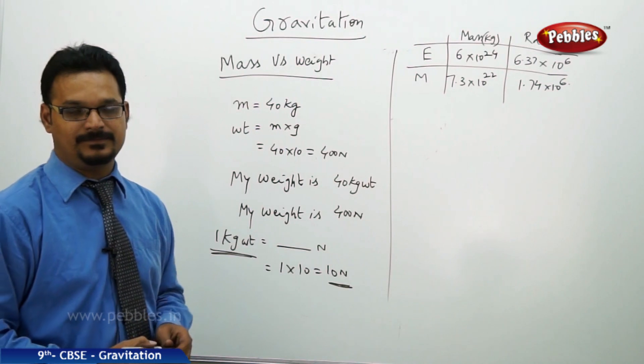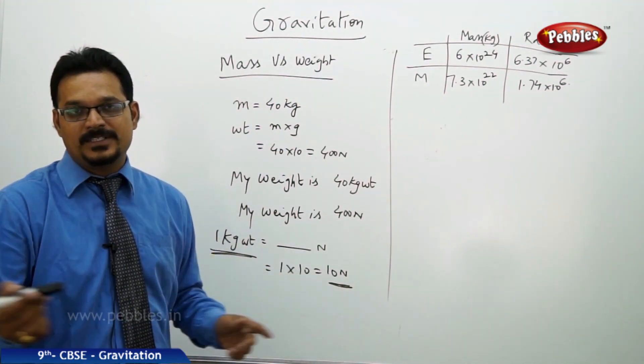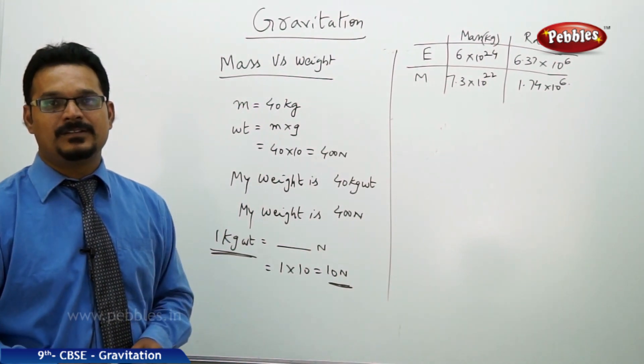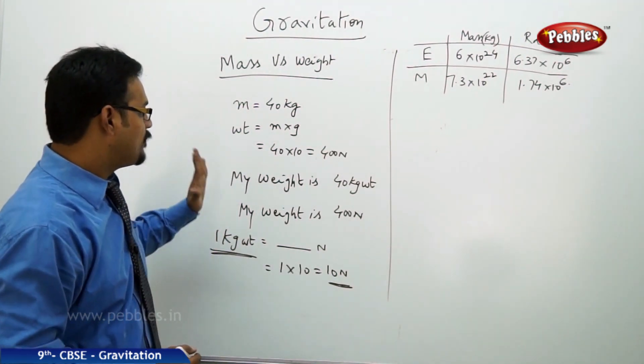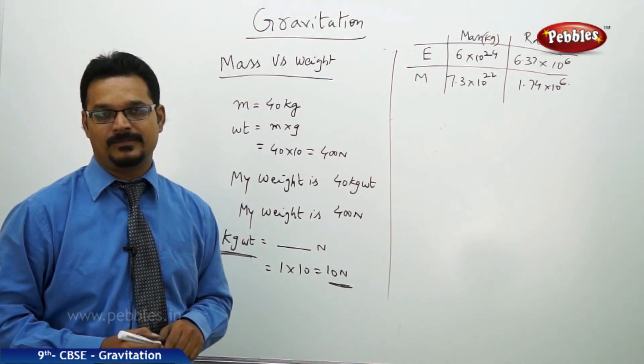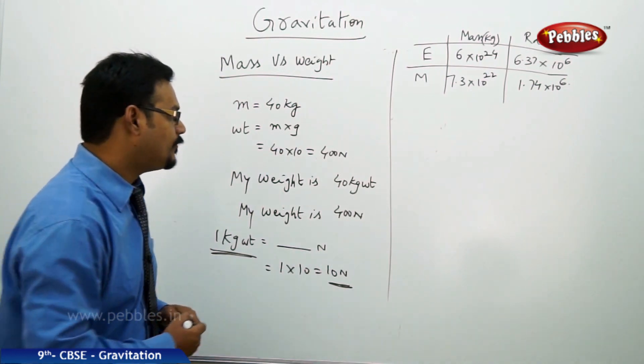Now it's become very simple. If somebody says my weight is 65 kg, then the answer is 650 newtons. If somebody says my weight is 80 kg, then the answer is 800 newtons. That's how you can convert from mass to weight.